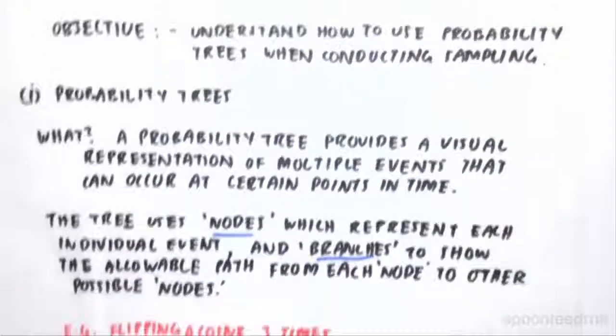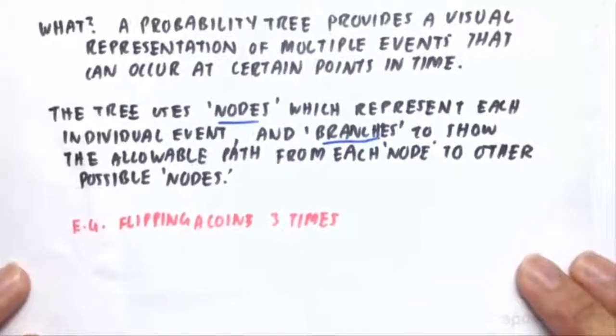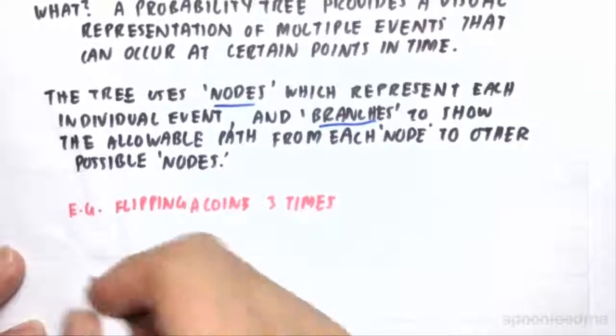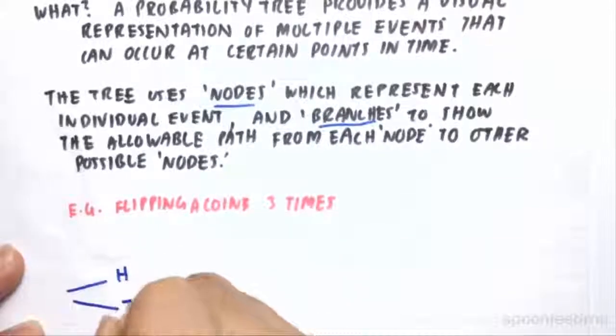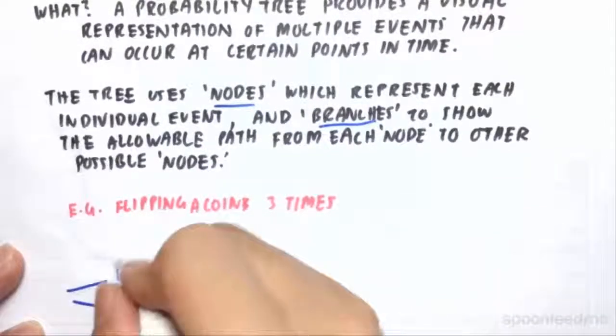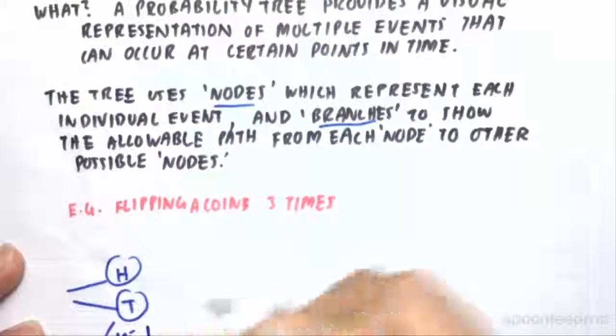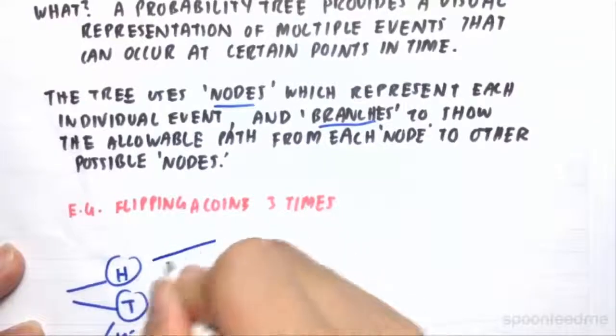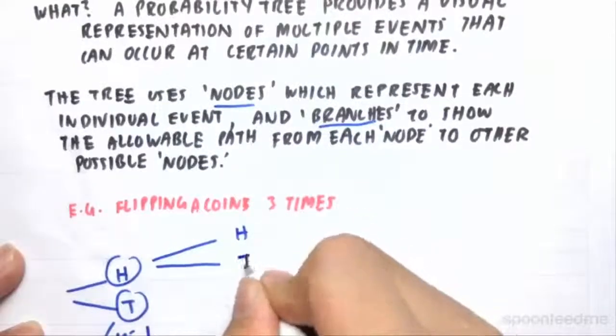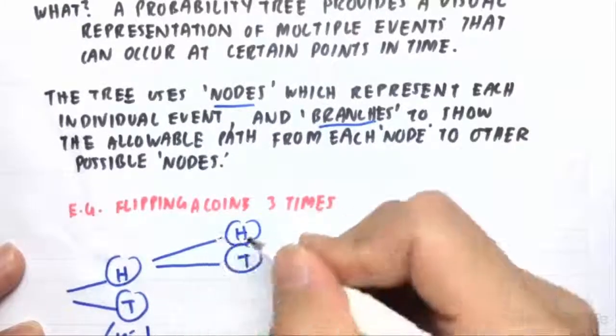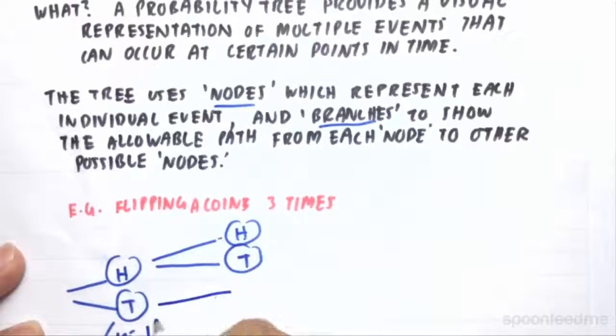For example, if we wanted to flip a coin, our probability tree would look something like this. So we have heads and tails. So these two would be our nodes, node 1. And then after that, we have these branches to show our possible outcomes or paths that can occur, heads and tails.